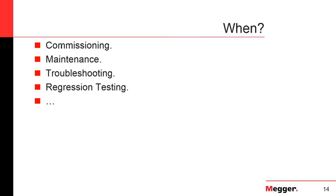When do you do end-to-end testing? Most of the time when you're doing commissioning, and also when you're doing maintenance. In commissioning, it's a no-brainer — when you're putting something into service, you have to test it all the way. However, when you're doing maintenance, end-to-end testing is becoming more and more popular to verify that whatever happened during commissioning is still okay and that whatever changes happened in the system haven't affected the ability of the protection scheme to properly protect the lines.